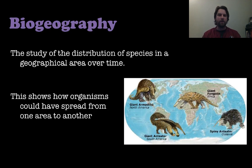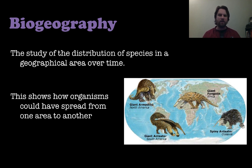Next is biogeography — the study of the distribution of species in a geographical area over a certain period of time — showing how organisms could have spread from one area to another. When all land masses were together in Pangaea, organisms moved freely, but then continental drift caused geographic isolation and climate changes, so the common ancestor started adapting to new environments. The armadillo, pangolin, and anteater from South America and Oceania all came from a common ancestor but evolved differently due to their environments.